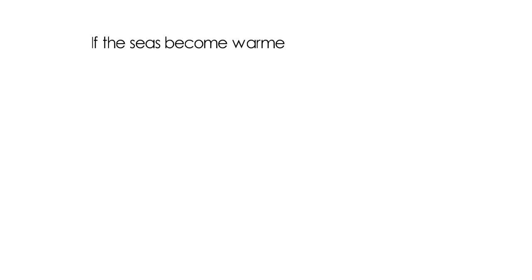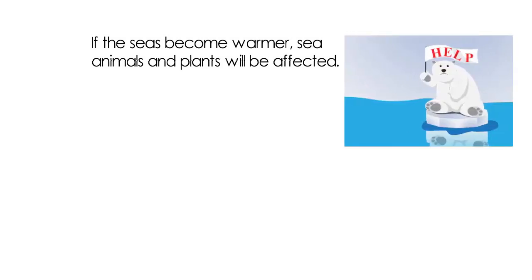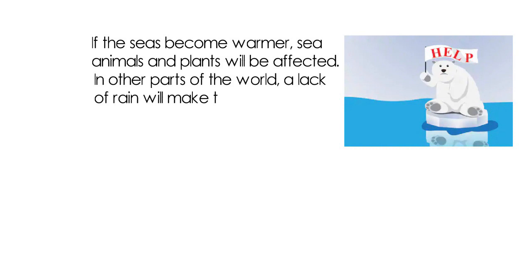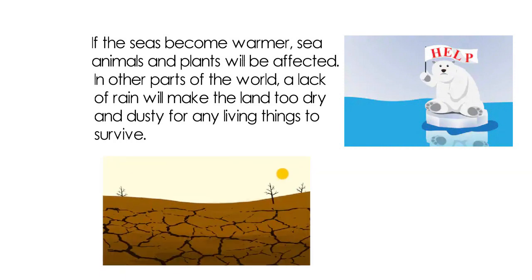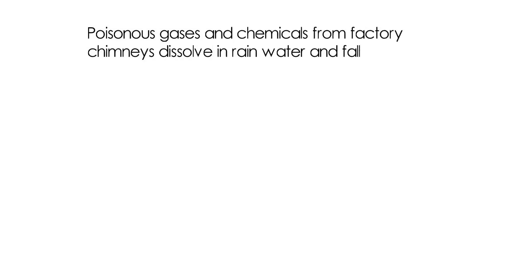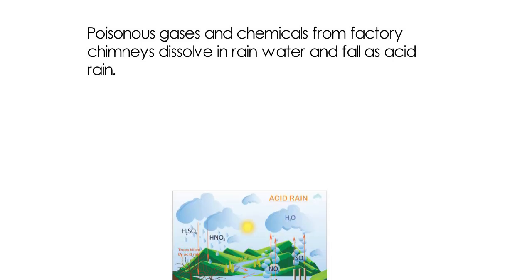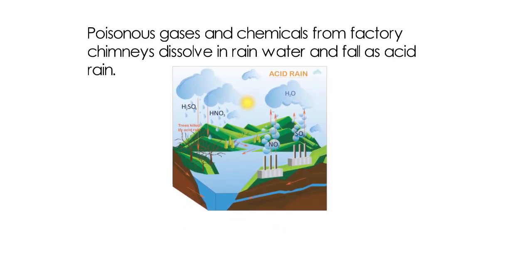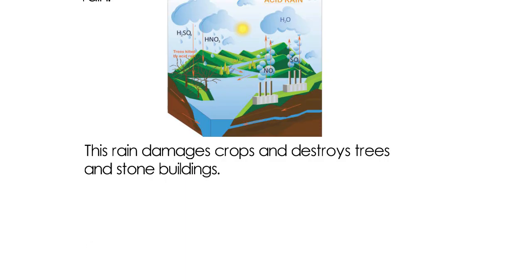If the seas become warmer, sea animals and plants will be affected. In other parts of the world, a lack of rain will make the land too dry and dusty for any living things to survive. Poisonous gases and chemicals from factory chimneys dissolve in rainwater and fall as acid rain. This rain damages crops and destroys trees and stone buildings. When acid rain falls in rivers and lakes, it harms the fish and plants living in the water.